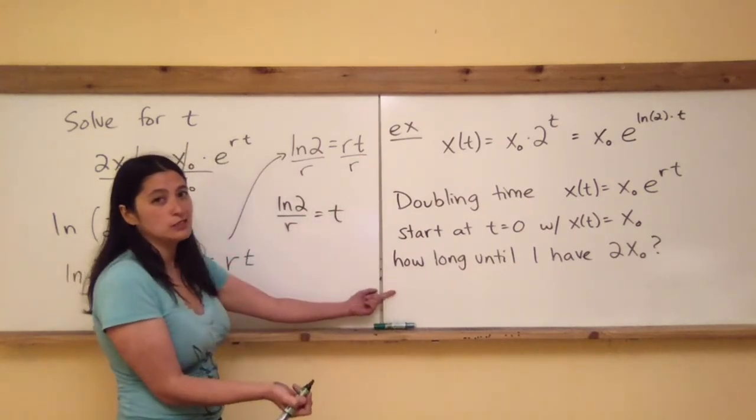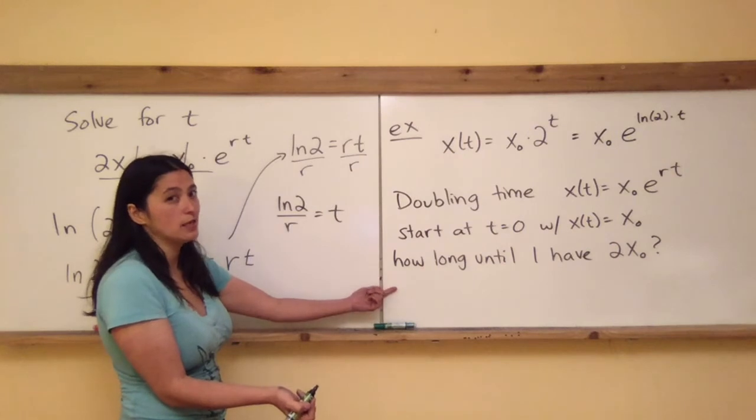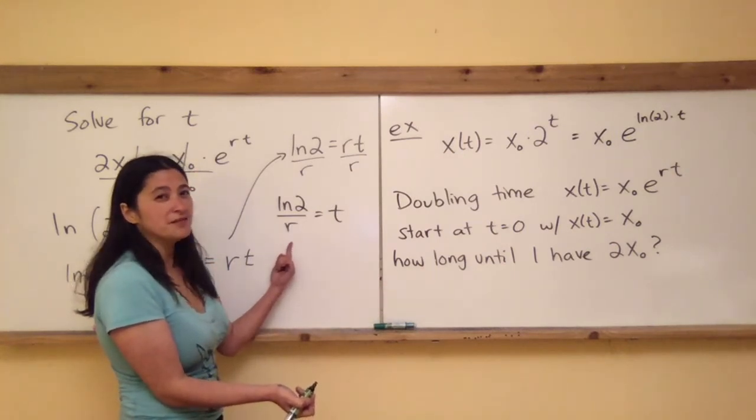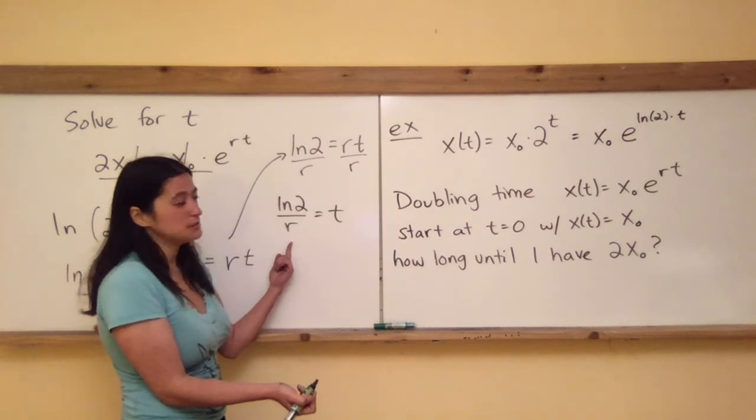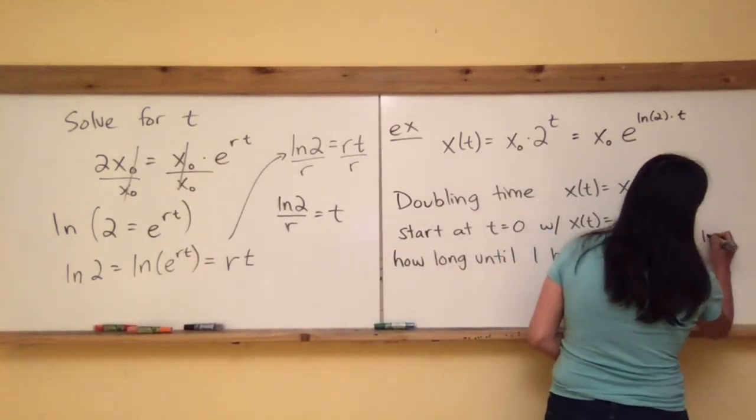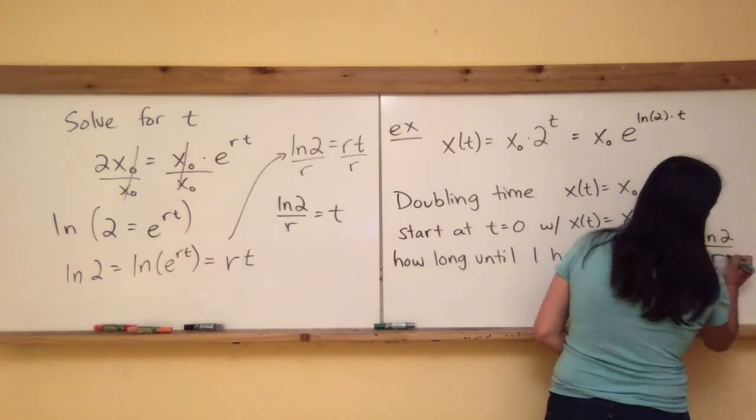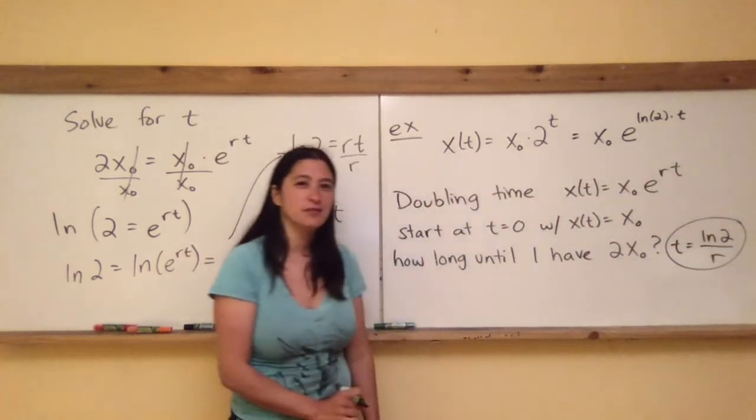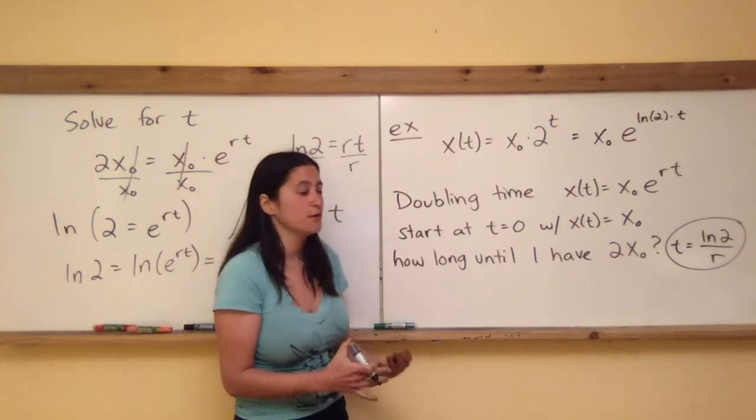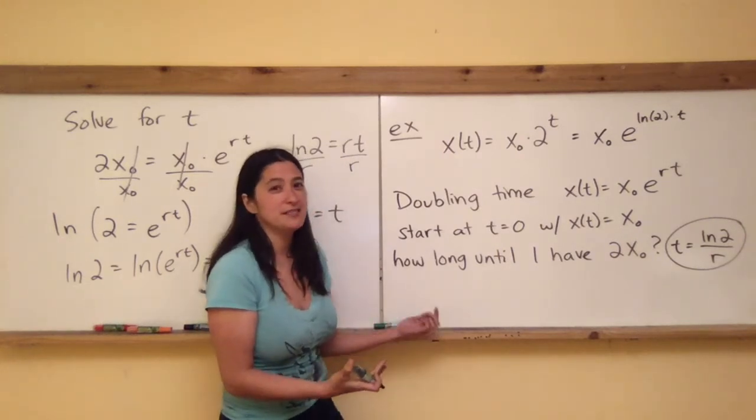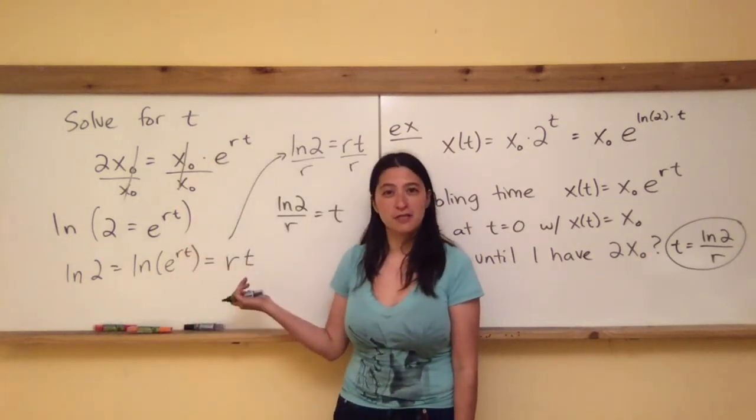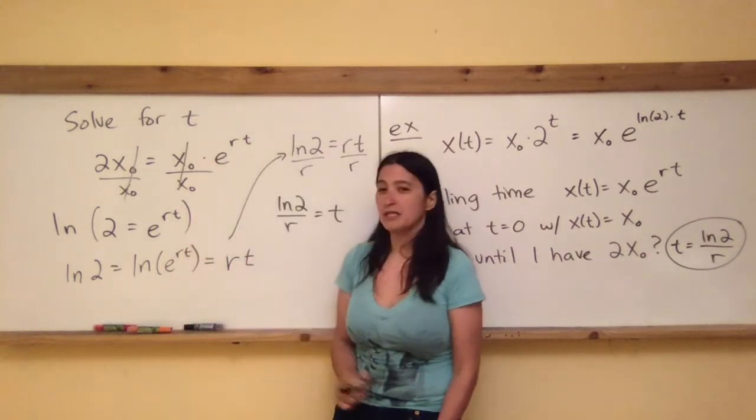Or to answer my question, how long will it take until I have double of what I started with? It's going to take me ln(2)/R time units. So the answer here is T = ln(2)/R. That's the answer for the doubling time. But hopefully you feel like it's not something that you need to memorize because it's something that you can derive using the properties of exponentials and logs, which was our precalculus knowledge.